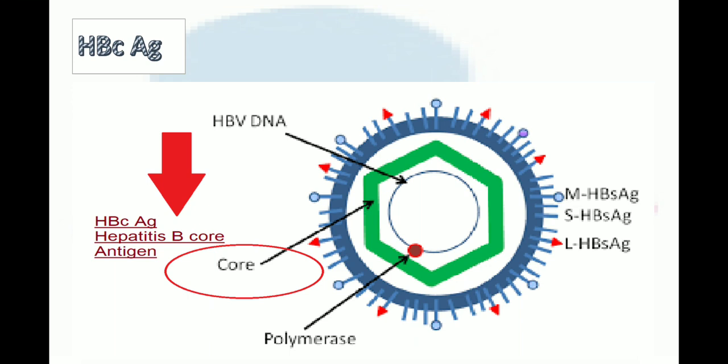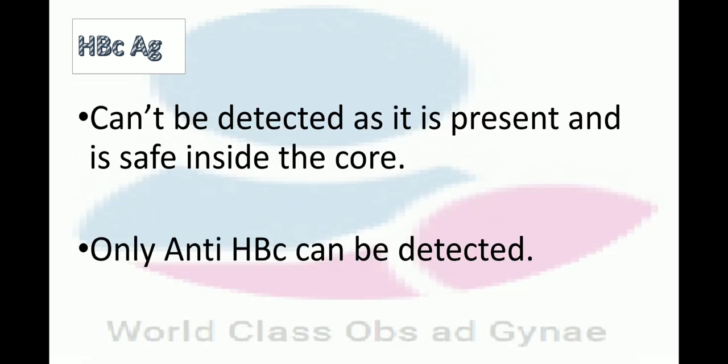The second antigen is HBc antigen. HBc antigen is basically hepatitis B core antigen. You can see in this figure the green portion — the core — and the hepatitis B antigen is located on that core. About HBc, I would like to say that it cannot be detected as it is present and safe inside the core. Only anti-HBc can be detected. So in the serology report, we don't have HBc antigen; we have anti-HBc, but we don't have HBc antigen.